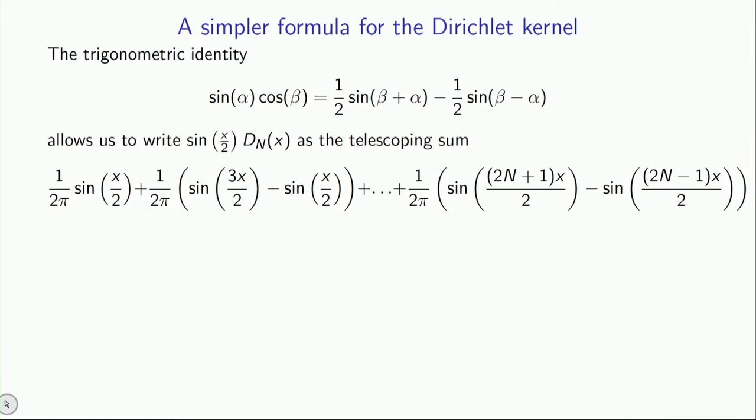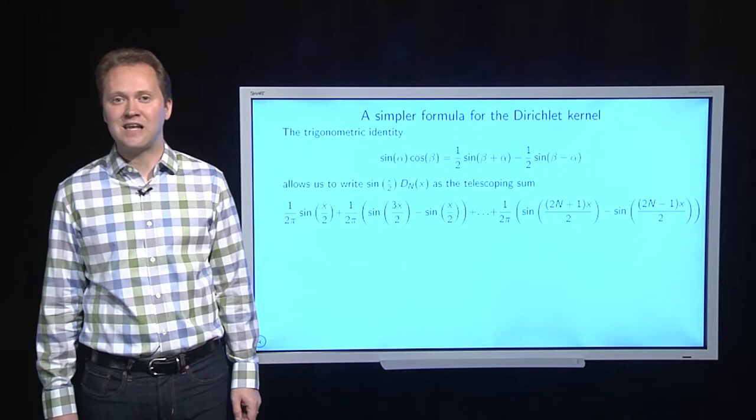well, there you have a sine times a cosine, and we expanded by the trig identity. So you get a sine minus another sine. And you keep on going like that down the Dirichlet kernel. Each time you have a sine times a cosine, you expand. Now, of course, this looks very complicated now. It seems like you've achieved nothing at all.